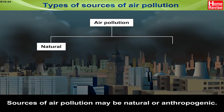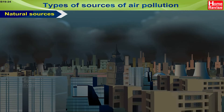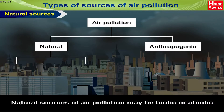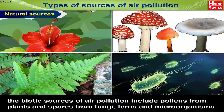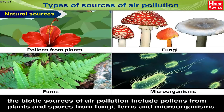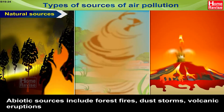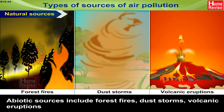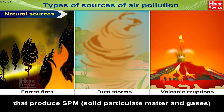Types of sources of air pollution: sources may be natural or anthropogenic. Natural sources of air pollution may be biotic or abiotic. Biotic sources include pollens from plants and spores from fungi, ferns, and microorganisms. Abiotic sources include forest fires, dust storms, and volcanic eruptions, which produce SPM (solid particulate matter) and gases.